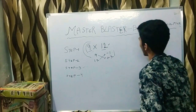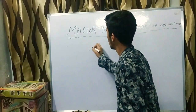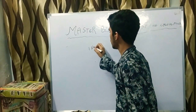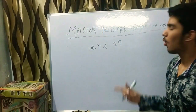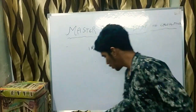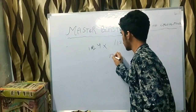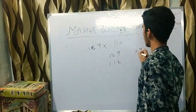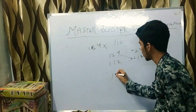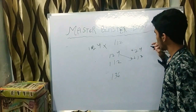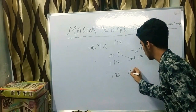Any big numbers can also be solved using this method. Let us take 124 into 112. Write the numbers: 124 and 112. The nearest base is 100. How much to add: 24 for 124, and 12 for 112. First number: add 12 to 124, which equals 136. Second number: multiply 24 by 12, which equals 288 — giving 136 and 288, so the answer is 13,888.